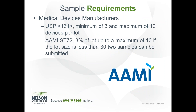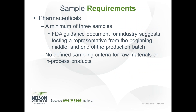Regarding sampling requirements, according to USP 161, you should test a minimum of three and a maximum of 10 devices. AIME ST72 suggests 3% of the lot up to a maximum of 10, and if your lot size is less than 30, two samples can be submitted. For pharmaceutical products, FDA requires a minimum of three samples be tested, and they recommend testing samples from the beginning, middle, and end of the production batch. There is no defined sampling criteria for raw materials or in-process products. With medical devices, we typically test devices pooled, so it is an average of the 3 to 10 devices, whereas pharmaceutical products are typically tested individually.